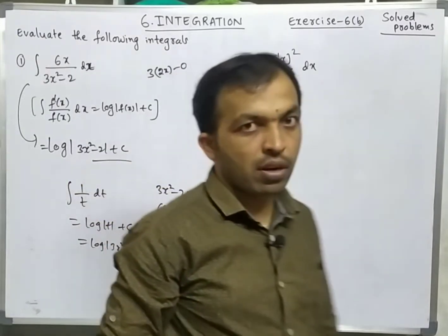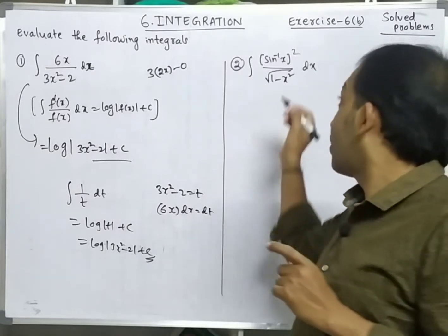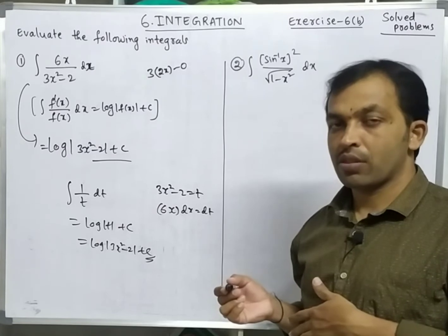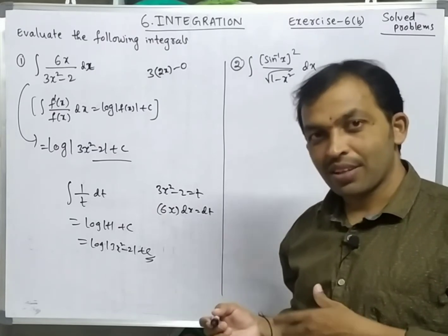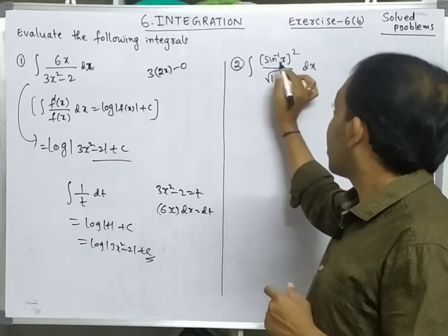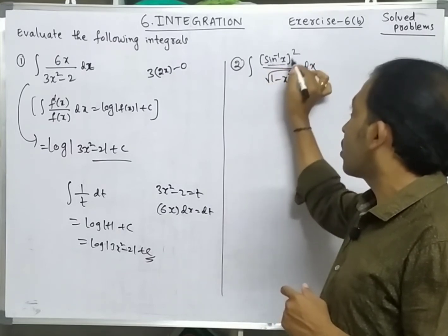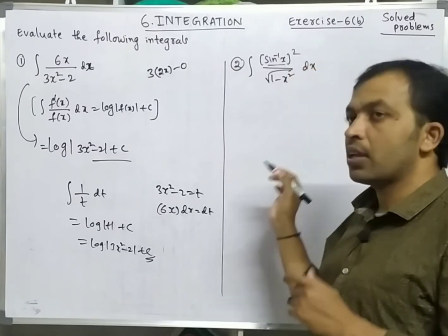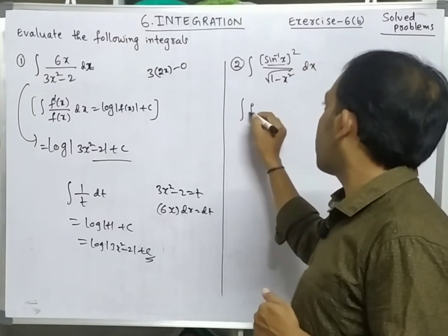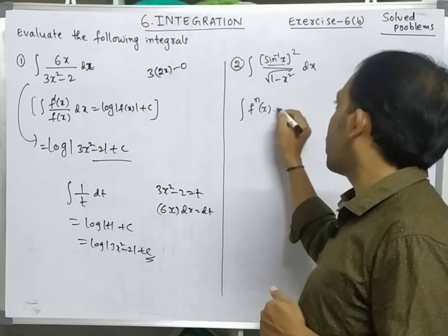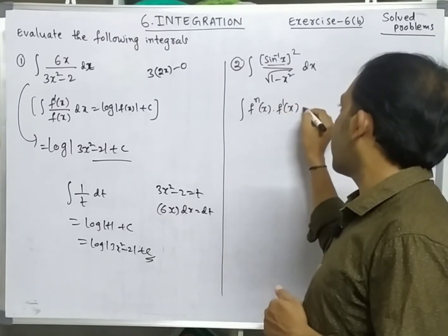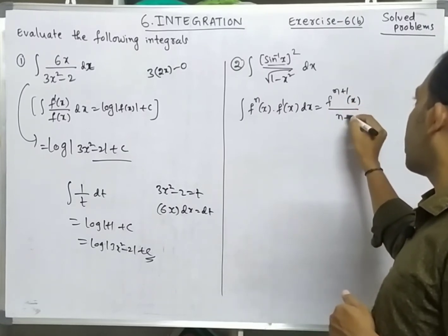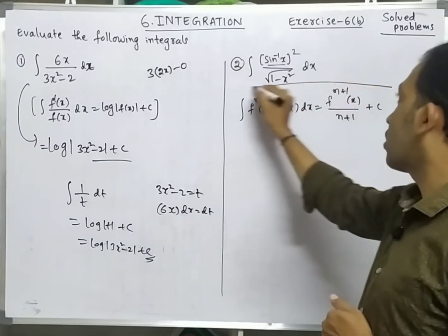Next problem: did you observe any formula from previous videos? The formula is integration of f(x)ⁿ · f'(x) dx equals f(x)^(n+1) / (n+1) + c. Here the derivative of sin⁻¹x whole square — immediately beside it we have the derivative of sin⁻¹x.